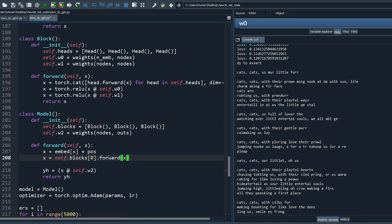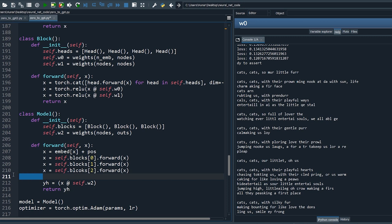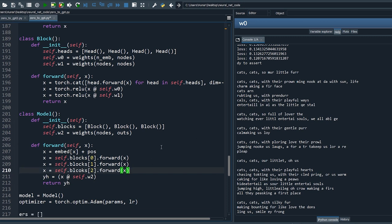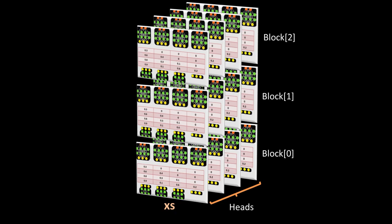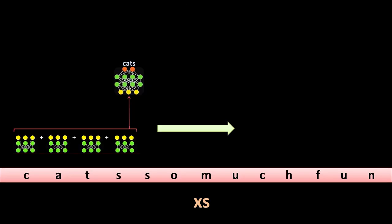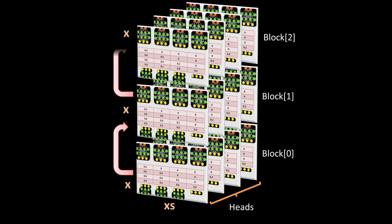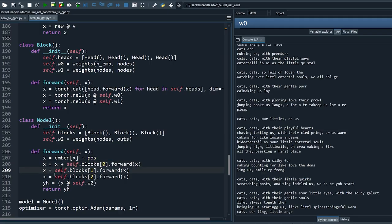As mentioned before, learning becomes difficult with more layers because of vanishing gradients. Another easy trick to mitigate this: use residual connections. Think of residual connections as convolutions across the layers — just like convolutions share weights across the input dimension, residual connections share inputs across layers, allowing learned patterns from lower layers to be reused in upper layers. To implement that, just re-add the input x across all the blocks.